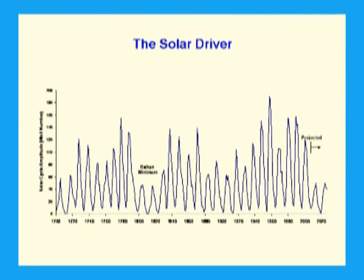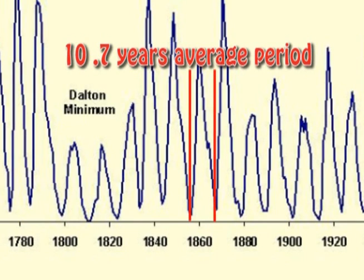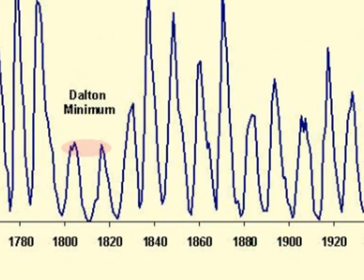The energy that stops the Earth from looking like Pluto comes from the Sun, and the level of this energy does change. This graph is of sunspot cycles since 1700. The average length of a sunspot cycle is 10.7 years. The Dalton minimum is a period of lower temperatures from 1796 to 1820, caused by the low amplitude of solar cycles 4 and 5.